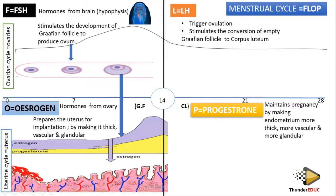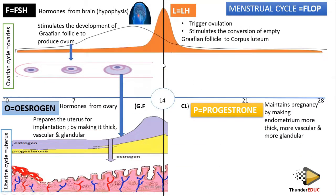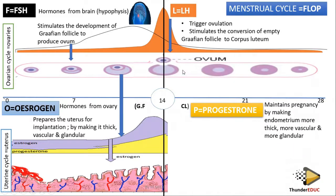Once the uterus is ready — ready to receive a zygote — on day 14, the level of luteinizing hormone increases extremely, reaching its peak. This triggers ovulation: the Graafian follicle bursts open and releases the ovum. The ovum has been released on day 14. What remains is the empty Graafian follicle — it was full before, but now the ovum is gone.